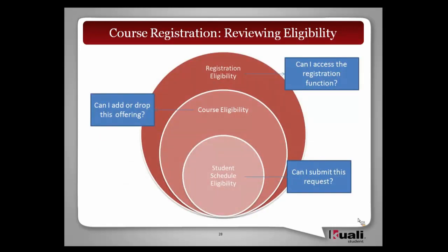This is a different way to represent a funnel effect. When you first start the registration process, you're part of a large population. Your first step is really: can I access the registration function of the system? That's about evaluating checks and basic eligibility. Course eligibility then answers: can I add or drop this specific offering? That pulls in things like prerequisites. Schedule eligibility is about: I've assembled this group of things I want to register for — can I submit it? Is everything playing together properly?